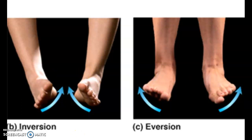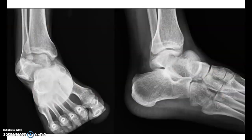The blood supply of the subtalar joint is mainly from two arteries: the posterior tibial artery and the peroneal arteries. These two arteries are responsible for the blood supply of the subtalar joint.